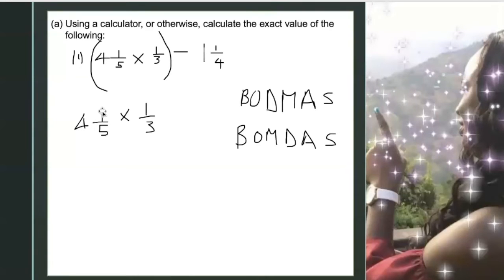First, let me go ahead and change this into an improper fraction because this is in a mixed fraction. So I multiply 4 times 5, 4 times 5 is 20. But then you add the 1. So in other words, I'll have this as 21 over 5 multiplied by 1 over 3.